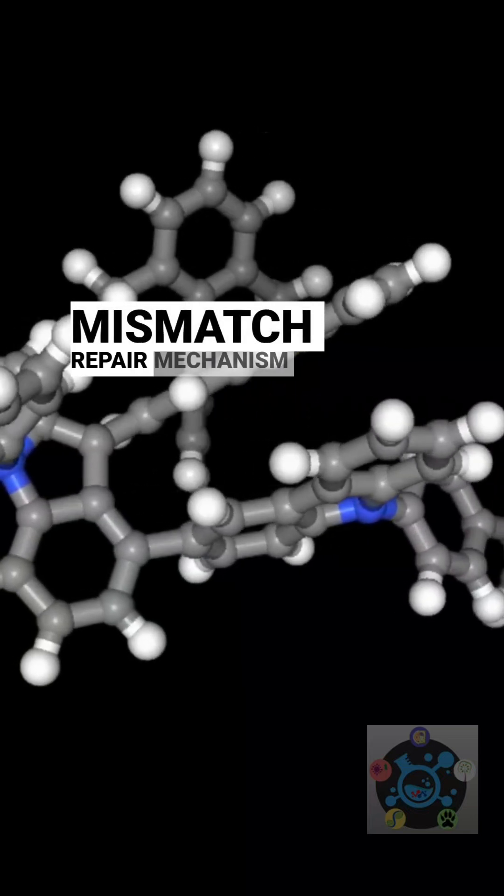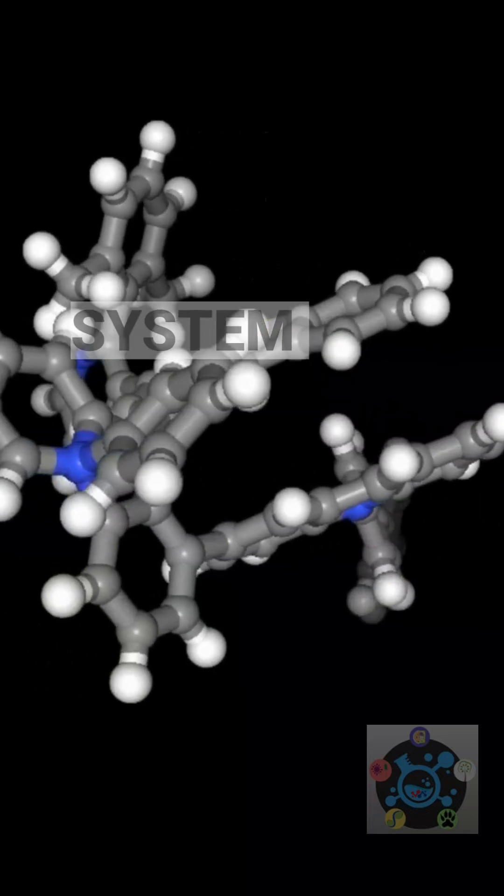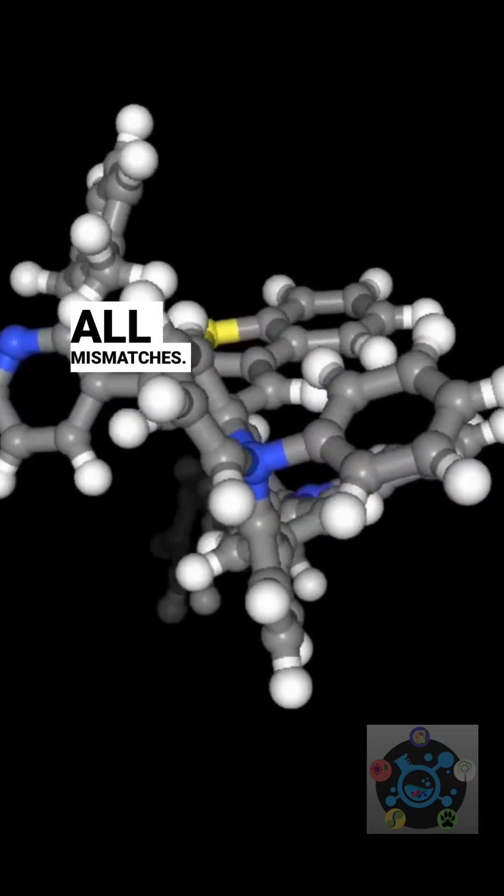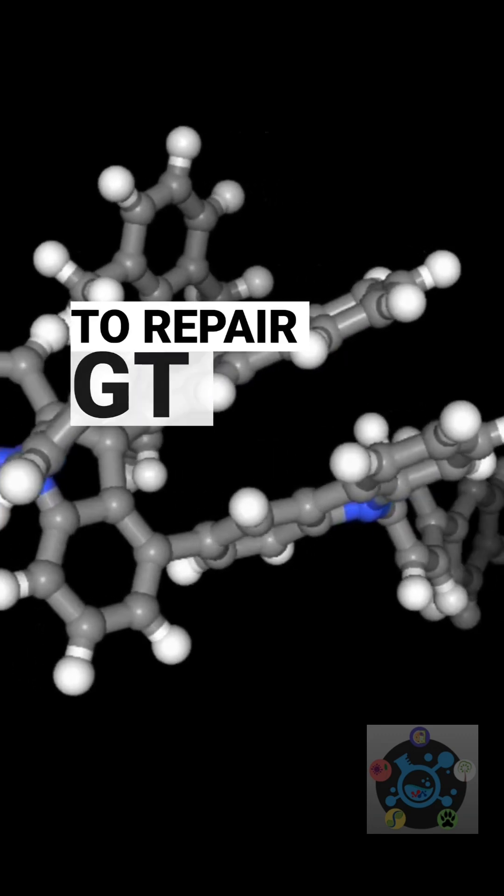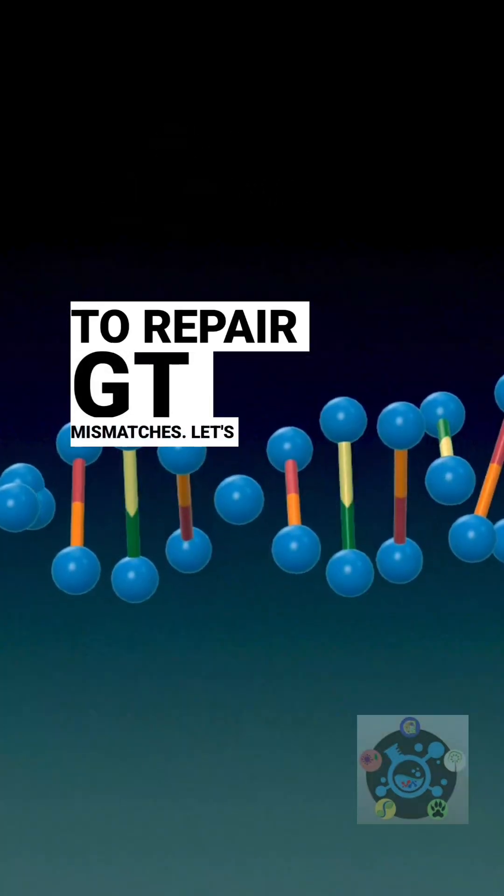This G-T mismatch repair mechanism occurs in addition to a more general system that repairs virtually all mismatches. Why might cells require a specialized system to repair G-T mismatches? Let's find out.